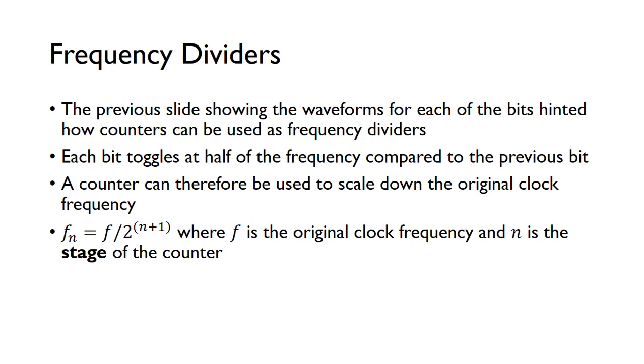Each bit toggles at half of the frequency compared to the previous bit. A counter can therefore be used to scale down the original clock frequency.